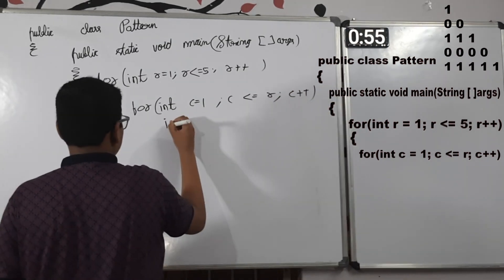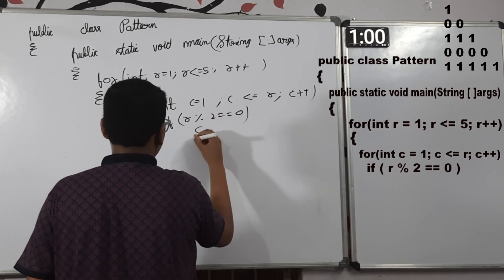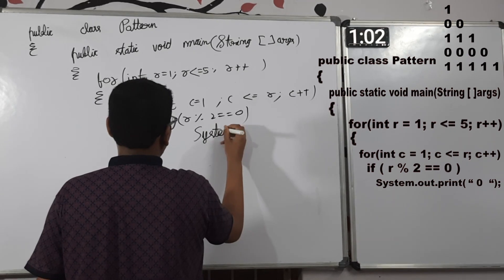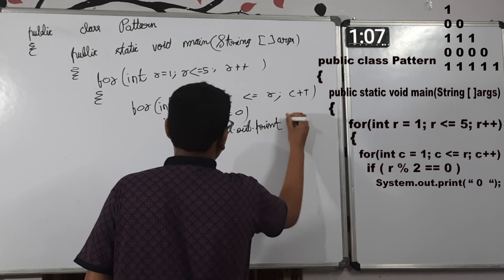Since it is an alternate row based pattern, we will check the row value. Now, if row value is even, then display 0 with some space.